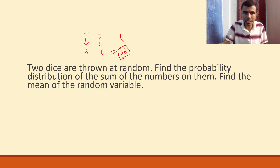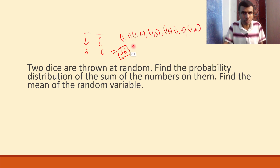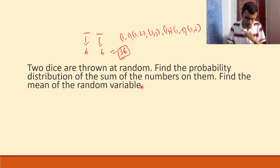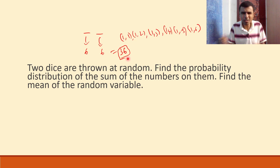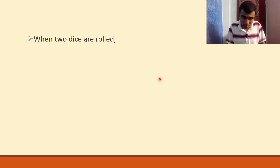So my sample space is 36. You will be getting something like (1,1), (1,2), (1,3), (1,4), (1,5), (1,6), and again (2,1), (2,2), (2,3), (2,4), (2,5), (2,6), (3,1), and so on. So you'll get 36 possibilities if you throw two dice. My sample space contains 36 sample points.